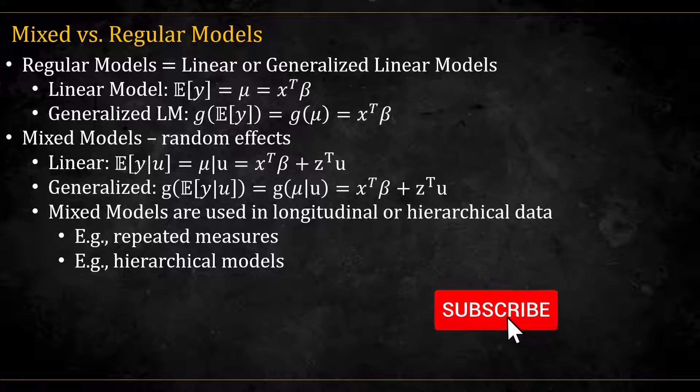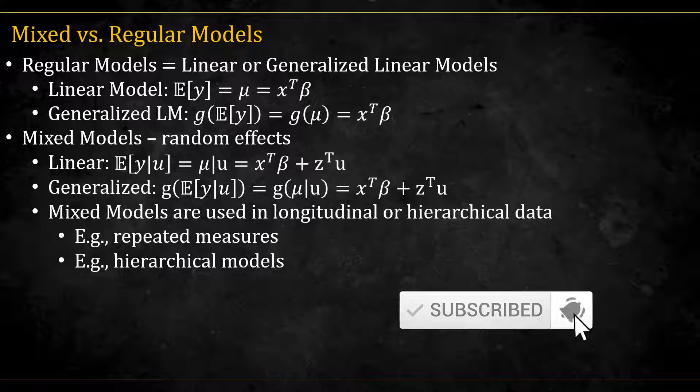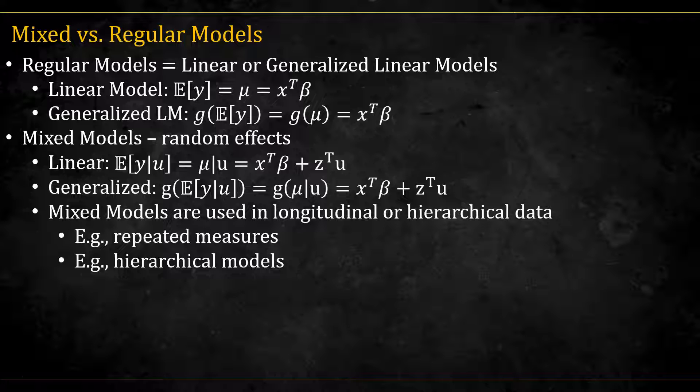Longitudinal means that we take repeated measures of something over time, for example, blood pressure. Hierarchical means that we measure something that comes from some hierarchy. For example, we measure finals test scores, and we expect schools to have some effect on it. Students are naturally grouped into schools, and we expect that better schools have generally better scores than worse off schools.